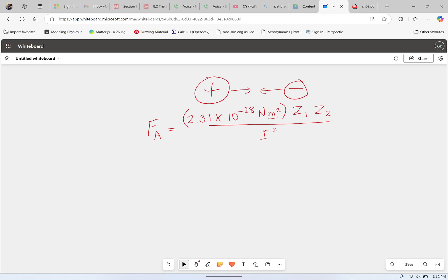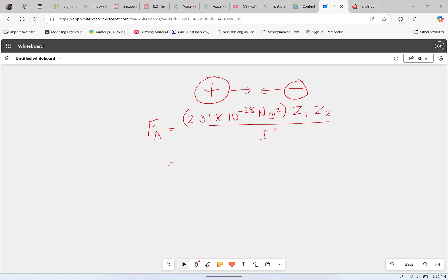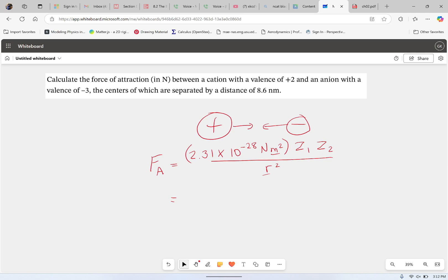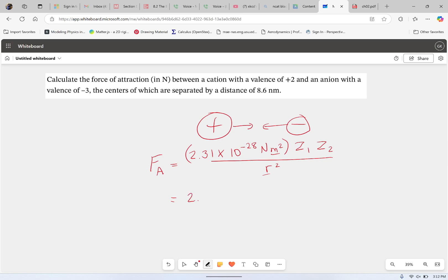The problem gave us everything else, so we can just plug it in and get our answer. So 2.31 × 10^-28 newton meters squared. I did neglect that we need to take the absolute value of the charges; otherwise, we'd get a negative force, which isn't true.